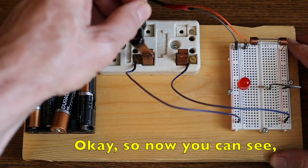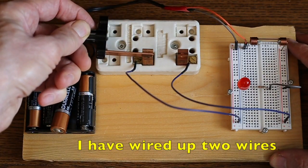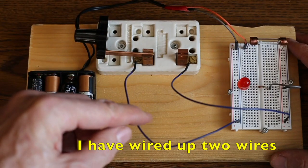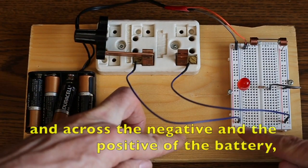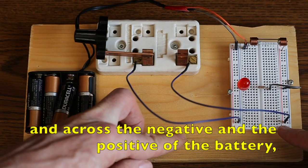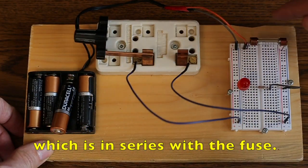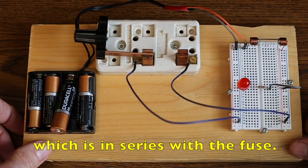It's a little tricky to hold there. Okay, so now you can see, I've wired up two wires, across the switch, and across the negative and the positive of the battery, which is in series with the fuse.